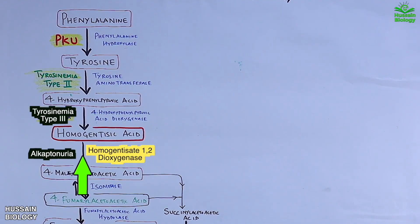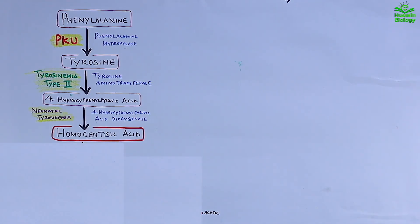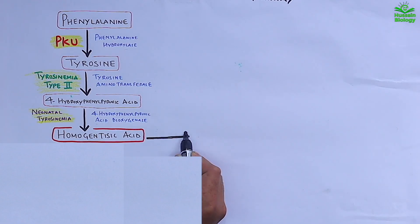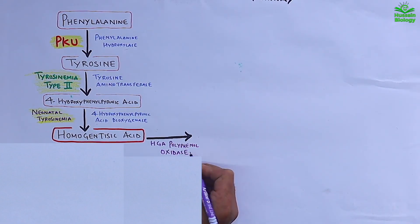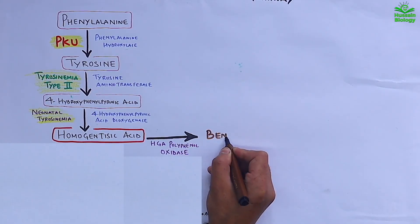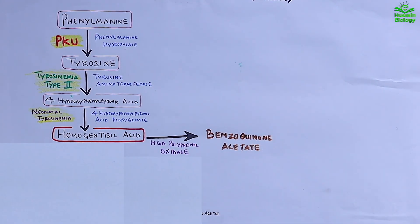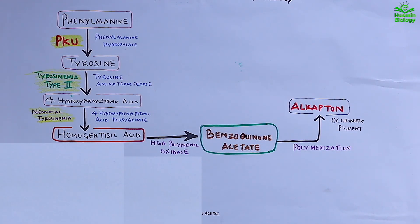The blockage in alkaptonuria is at the HGD step — the HGD gene is missing and further reactions do not occur. When homogentisic acid accumulates, it is acted upon by HGA polyphenol oxidase in an auto-oxidation reaction, converting homogentisic acid into benzoquinone acetate. From here, polymerization starts: benzoquinone acetate is polymerized into alkapton, an ochronotic pigment. Alkapton is a dark pigment from which alkaptonuria gets its name.